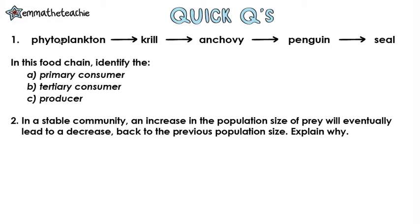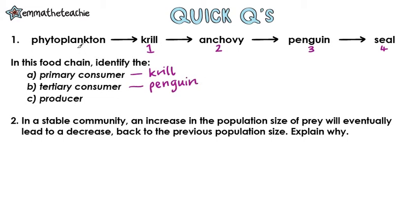The first thing to start with is making sure you know what each one is. I suggest you number the different levels. Primary means one, so the primary consumer is the krill. Tertiary means three, so that is going to be the penguin. And finally, the producer — that's always just whatever is at the start of the food chain. So here, that's the phytoplankton.